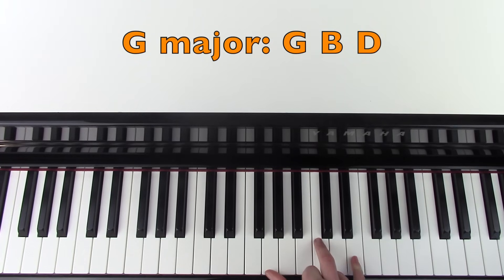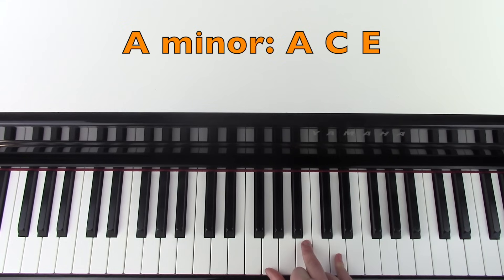Keep your thumb there and bring these notes in to B and D and play G major. Play that twice. Then move that whole shape up one, which is an A minor chord, so A, C and E. You're going to play that twice.